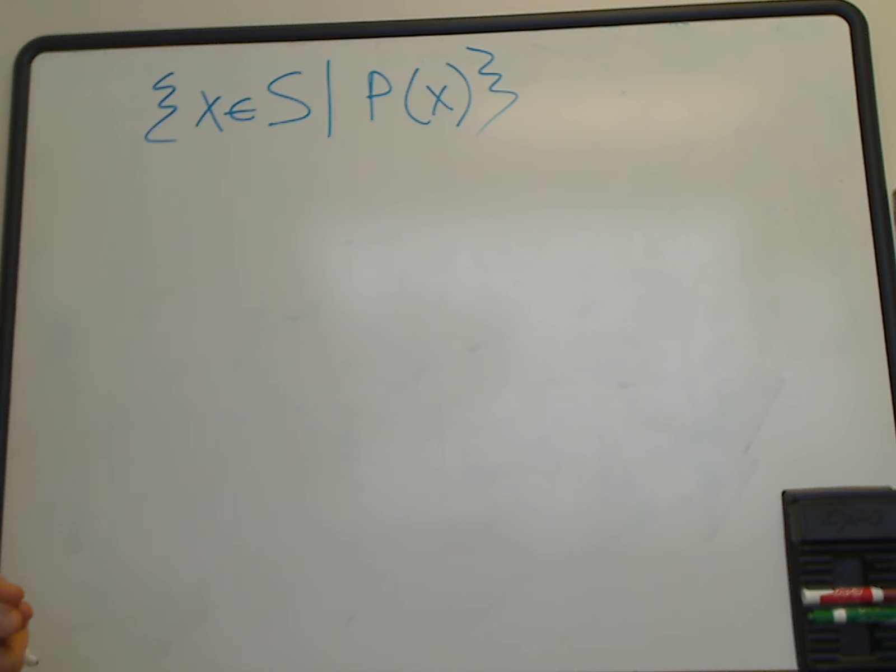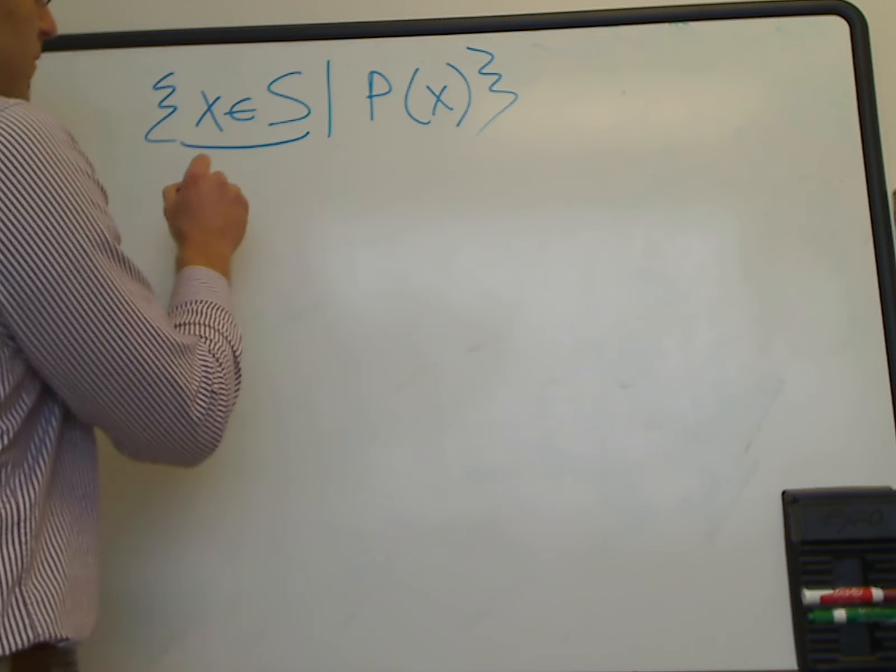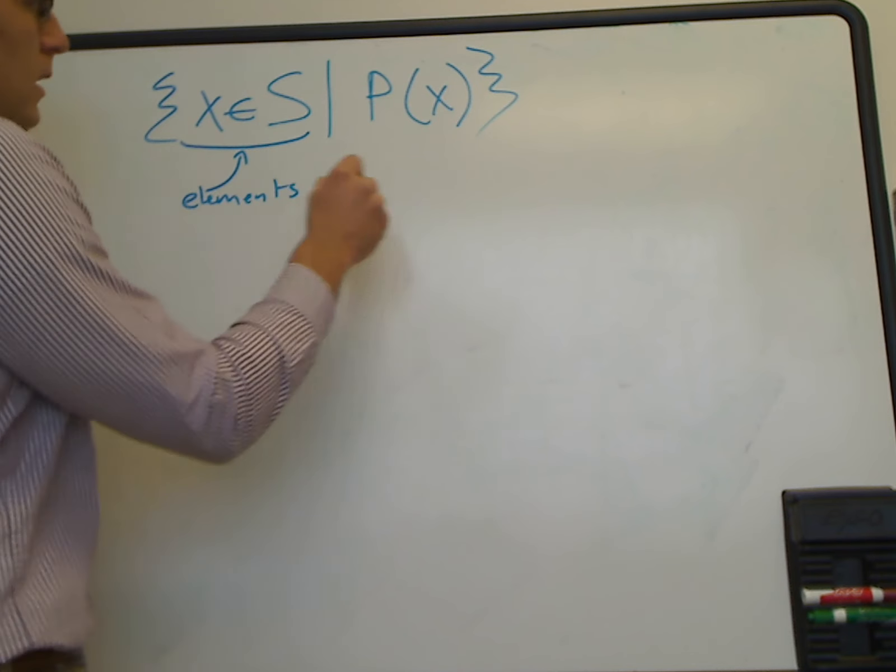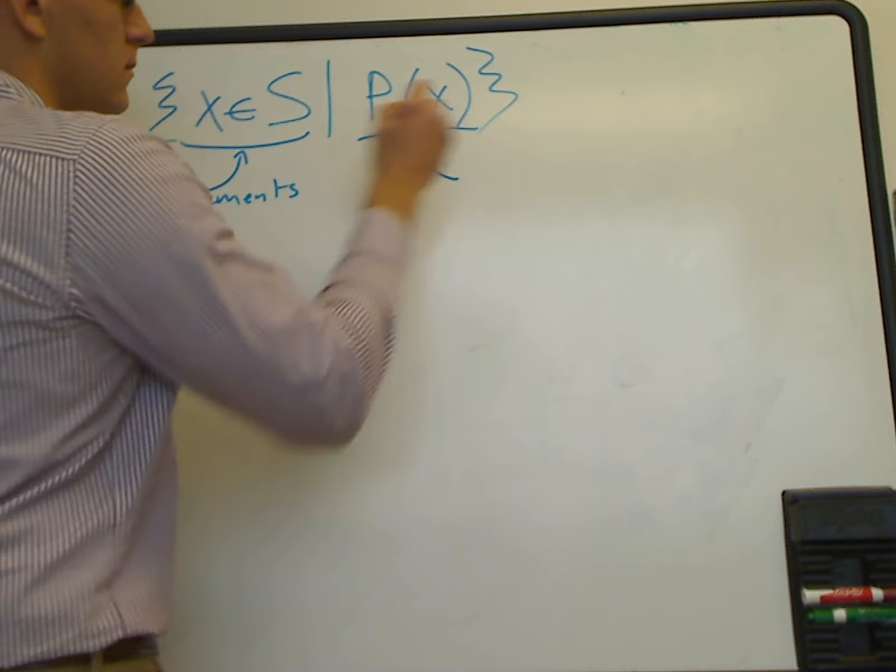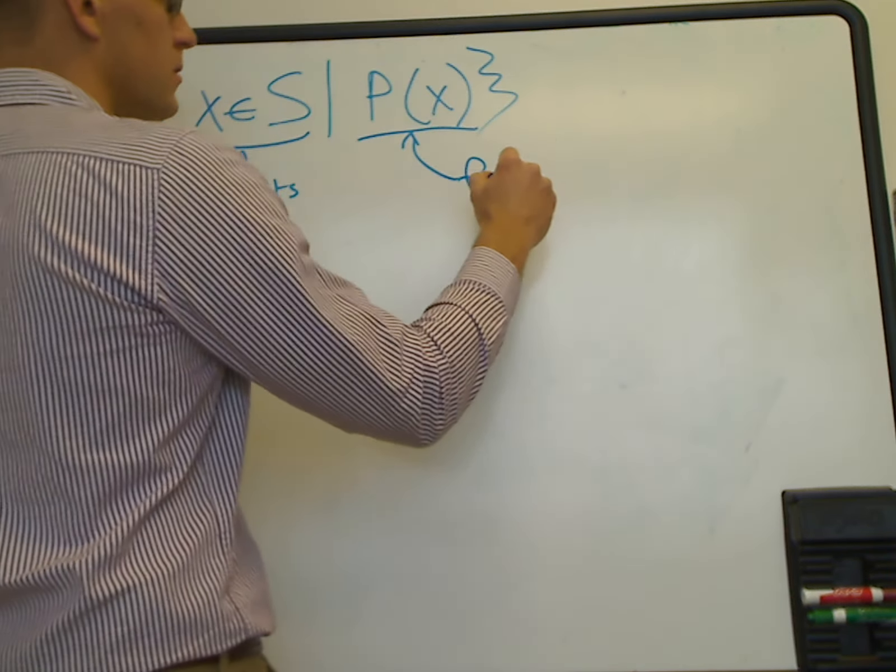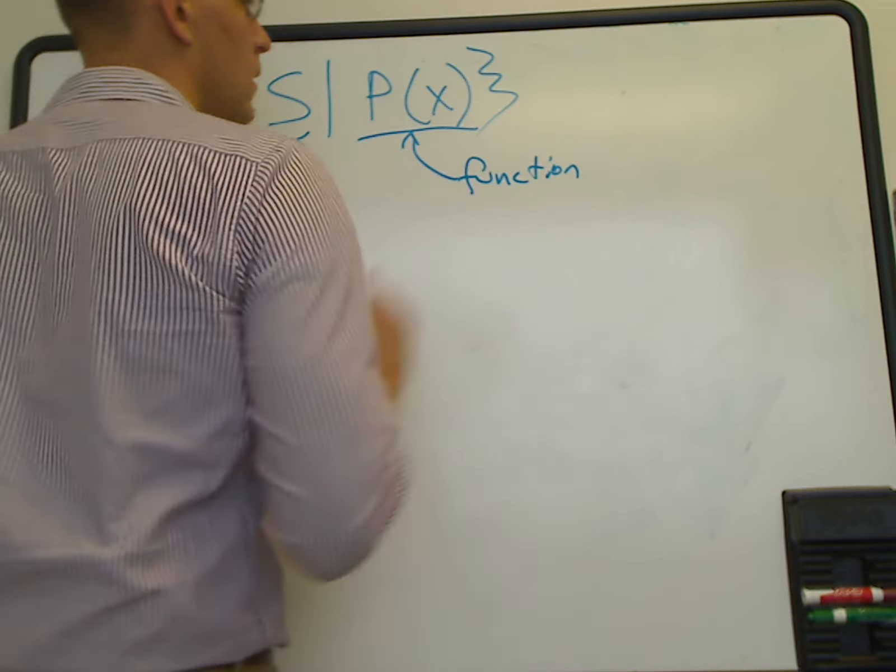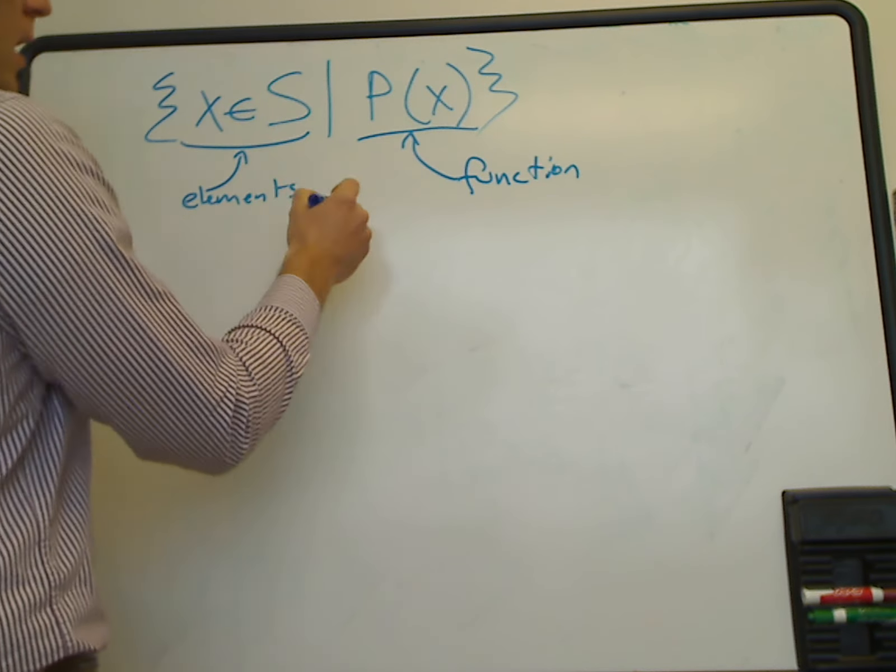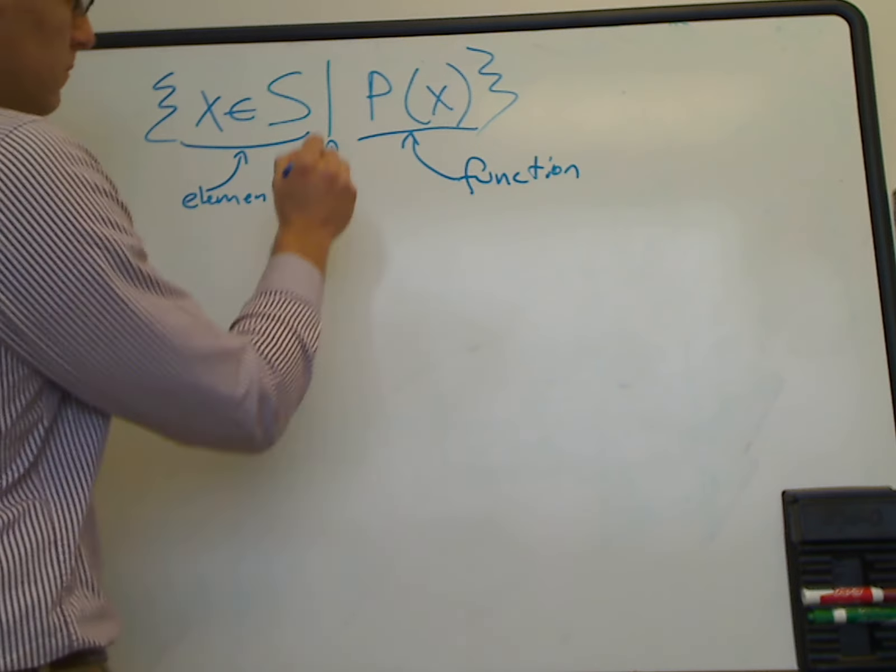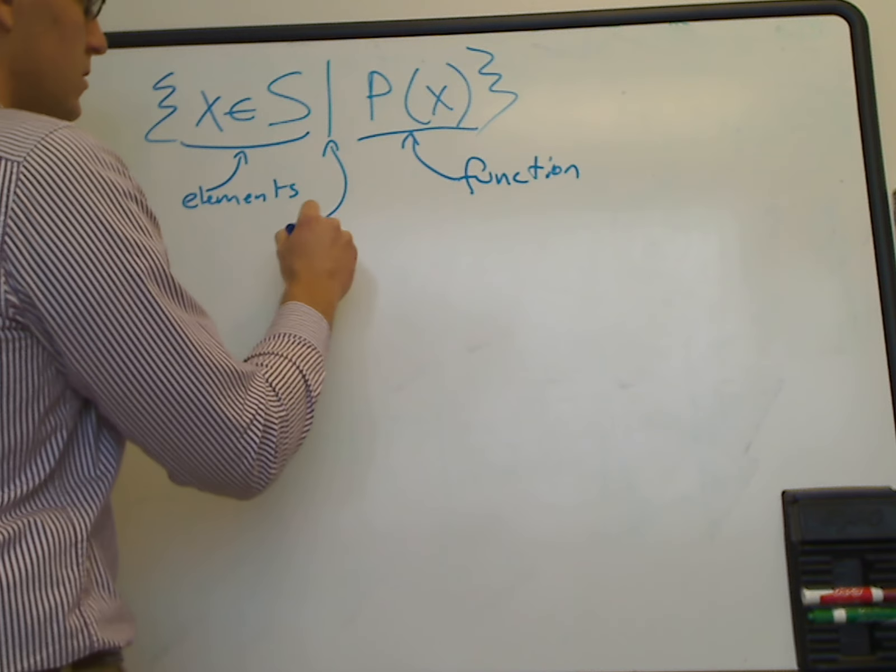This is an example of the general form of set builder notation. What we have on the left is the description of the elements in the set. On the right is the description of the function. This vertical bar in the center means 'such that'.